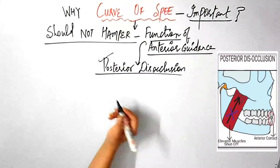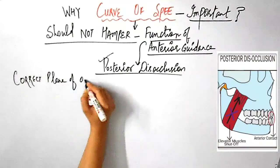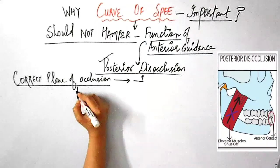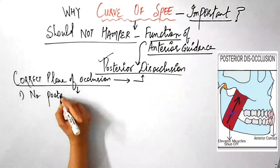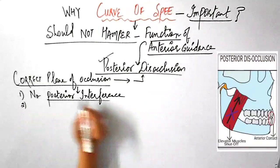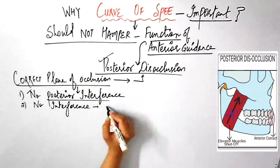So, the posterior disocclusion means that as the mandible is protruded, the anteriors come in contact and all the posteriors disocclude as you can see in this picture. So, a correct plane of occlusion allows the protrusion without posterior interference.